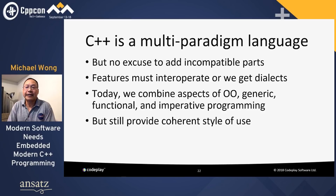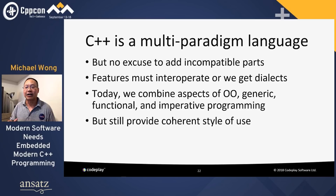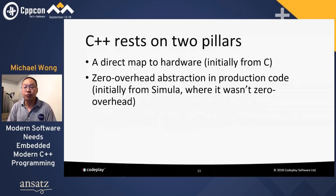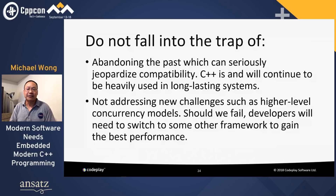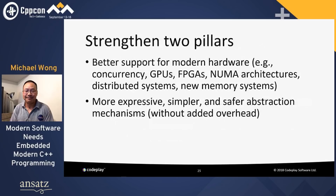C++ is a multi-paradigm language with no excuse to add incompatible parts. Today we combine aspects of object-oriented programming with generic, functional, and imperative programming, trying to provide a coherent style of use. We rest on two pillars: a direct map to hardware, and zero overhead abstraction in production code. We don't want to abandon this past or stop addressing new challenges like higher-level concurrency models. We want to strengthen supporting modern hardware and provide more expressive, simpler, and safer abstraction mechanisms without adding overhead.